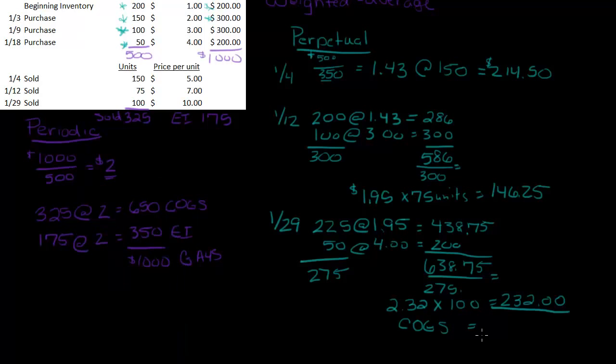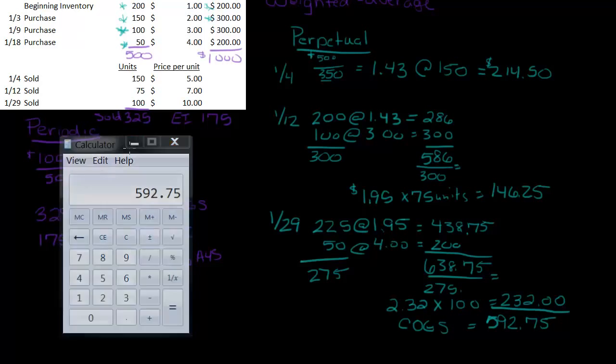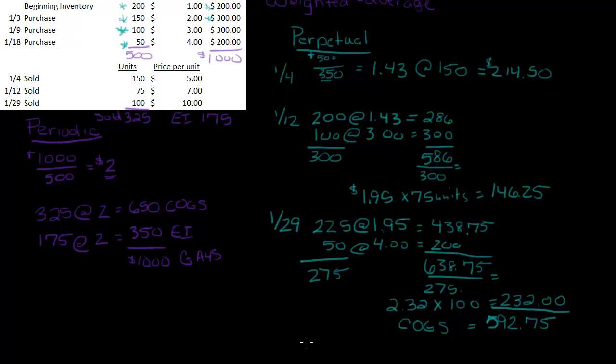So the cost of goods sold is $592.75. Let me just check that number to make sure I put it in right. $592.75, excellent. So that's my cost of goods sold.